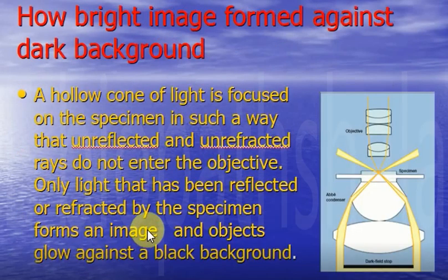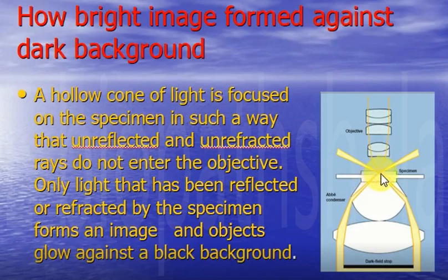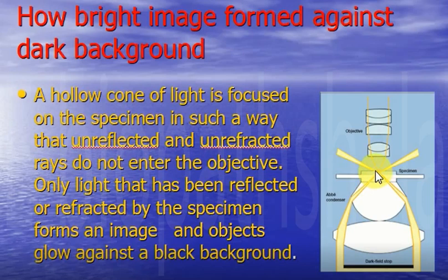How is a bright image formed against a dark background? A hollow cone of light is focused on the specimen which contains living cells or living organisms. The reflected light from the specimen enters the objective and only forms the image. A hollow cone of light enters the specimen and the image is formed against a dark background. Only the reflected light that passes through the specimen enters the objective, and only that portion forms the image against the dark background.